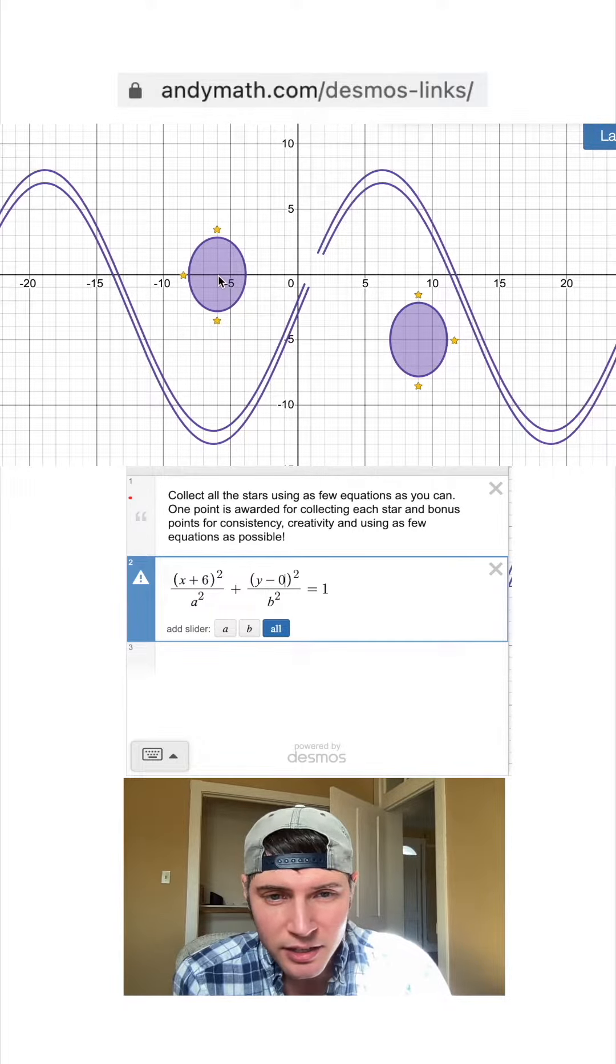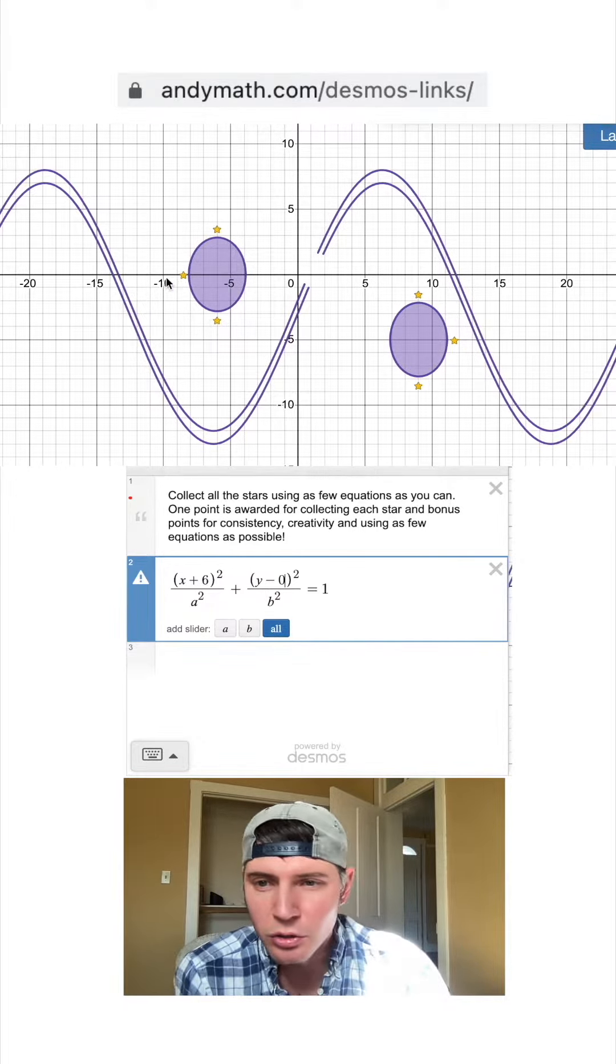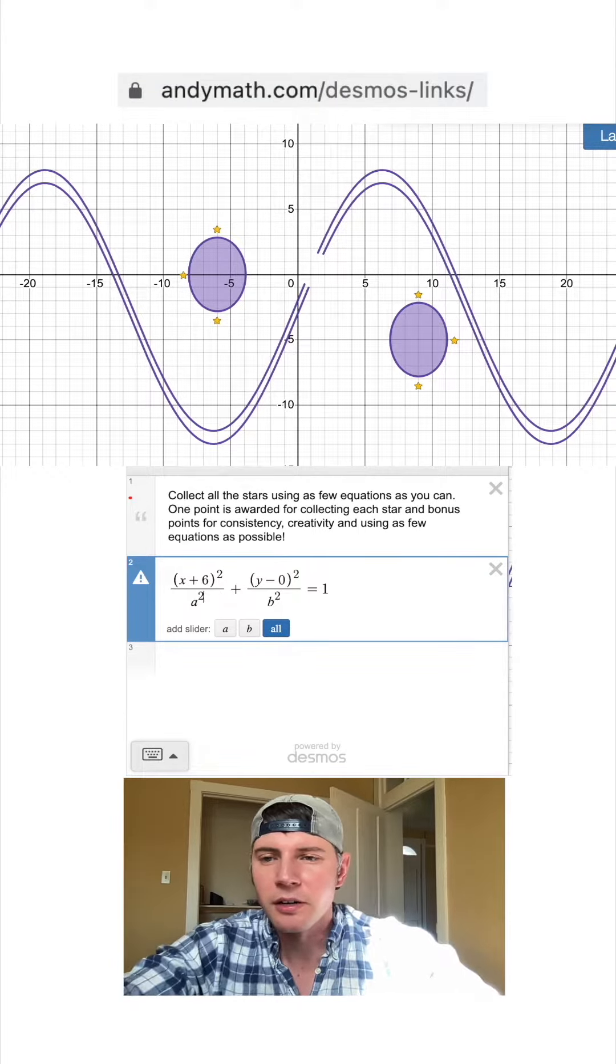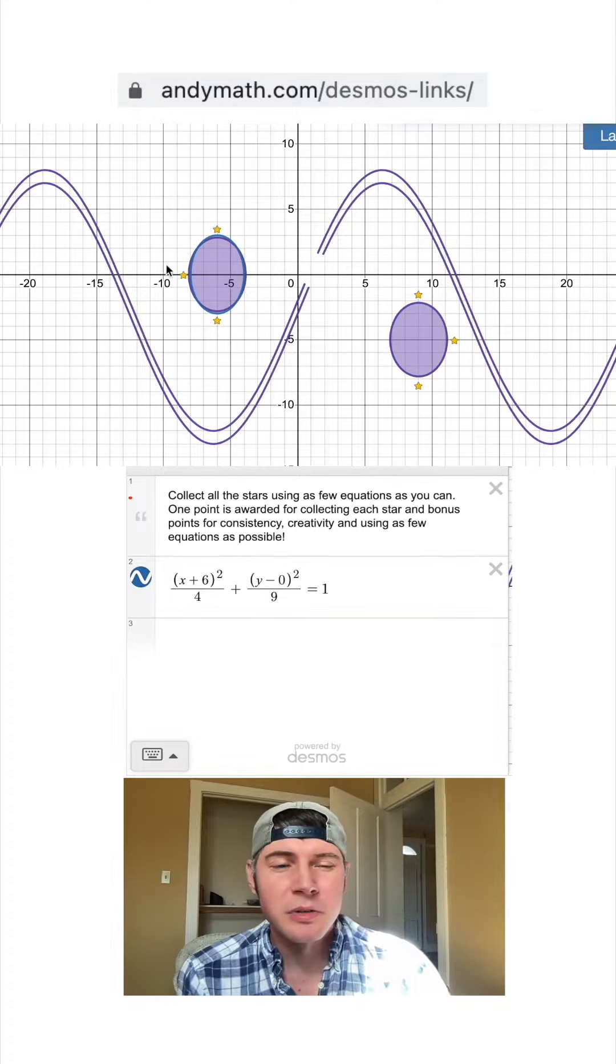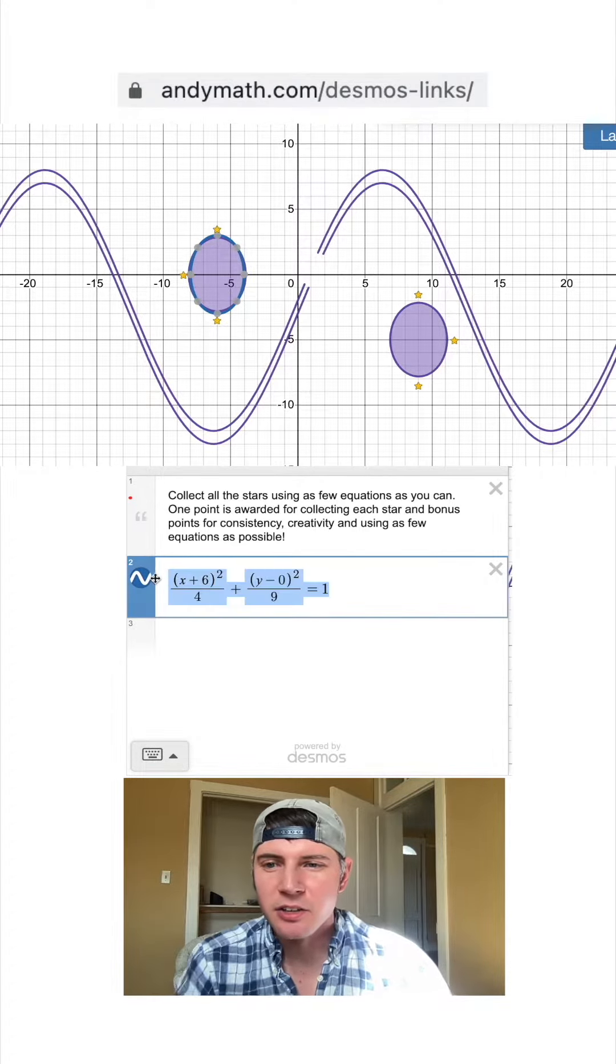Next, the radius in the x direction is 2, so I'm going to make this a 4. And the radius in the y direction is about 3, so I'm going to make this a 9. So now I pretty much have this ellipse right here.